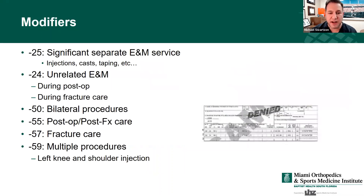Regarding modifiers: modifier 25 is for procedures. If you're seeing someone in a global period, you can put modifier 24. For example, if they come in for a hand fracture follow-up but their shoulder now hurts because of how they're using their hand and you need to address that separately — that could be considered a separate issue warranting the modifier.